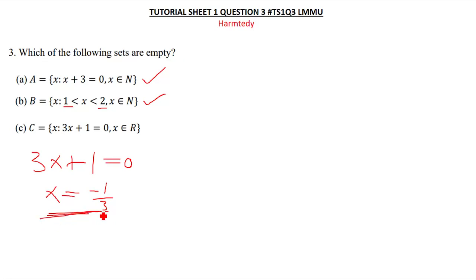So negative 1 over 3 is the solution there. Is negative 1 over 3 a member of real numbers? The answer is yes. Negative 1 over 3 is a member of real numbers because real numbers are just a set of all rational numbers and rational numbers, meaning we are talking about numbers from negative infinity to positive infinity.